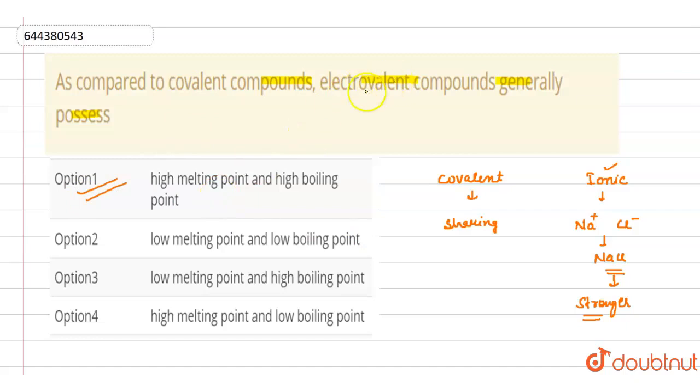to covalent compounds, electrovalent or ionic compounds have high melting and boiling points due to their stronger bonding.